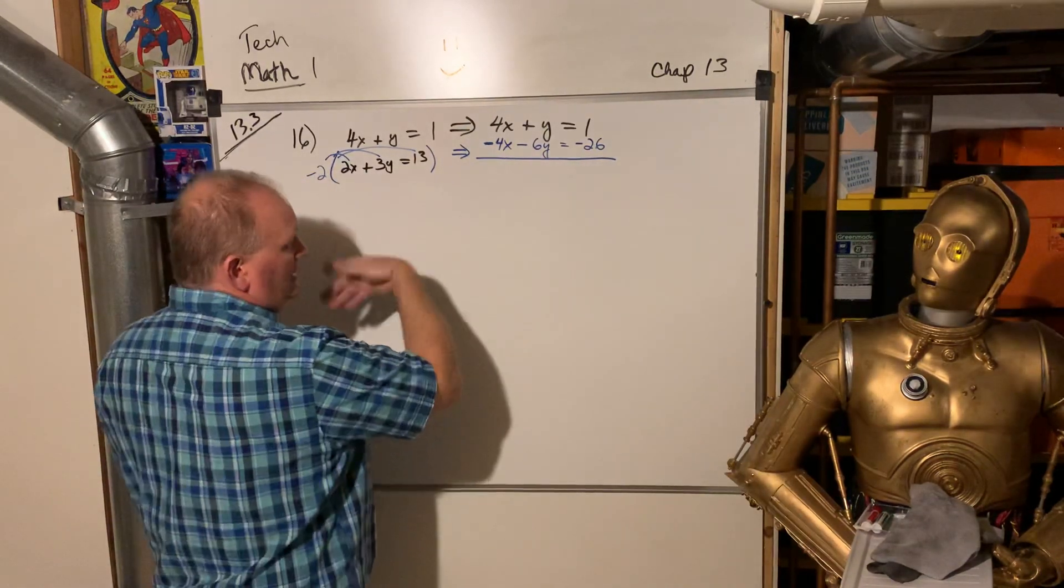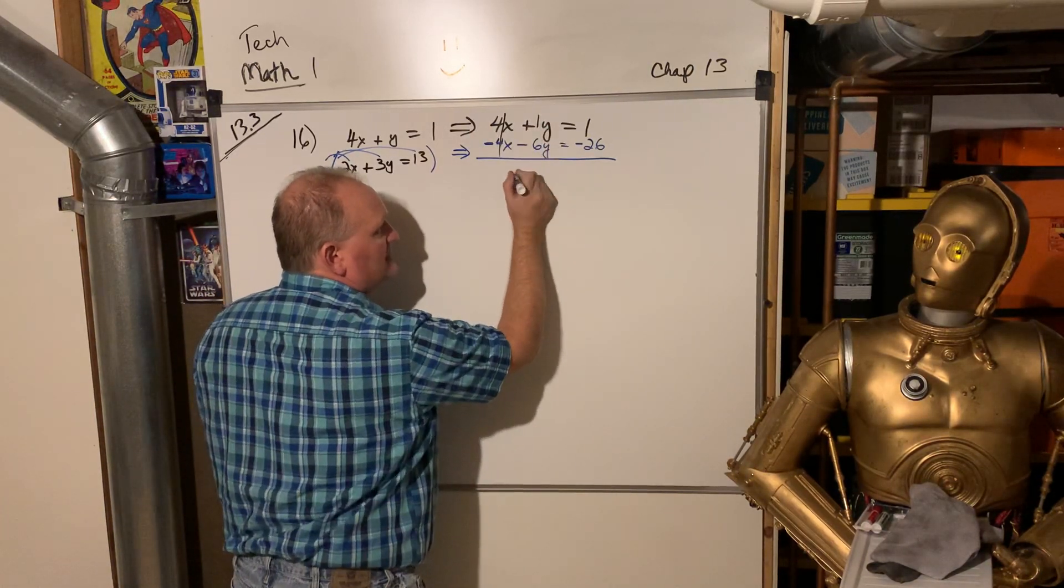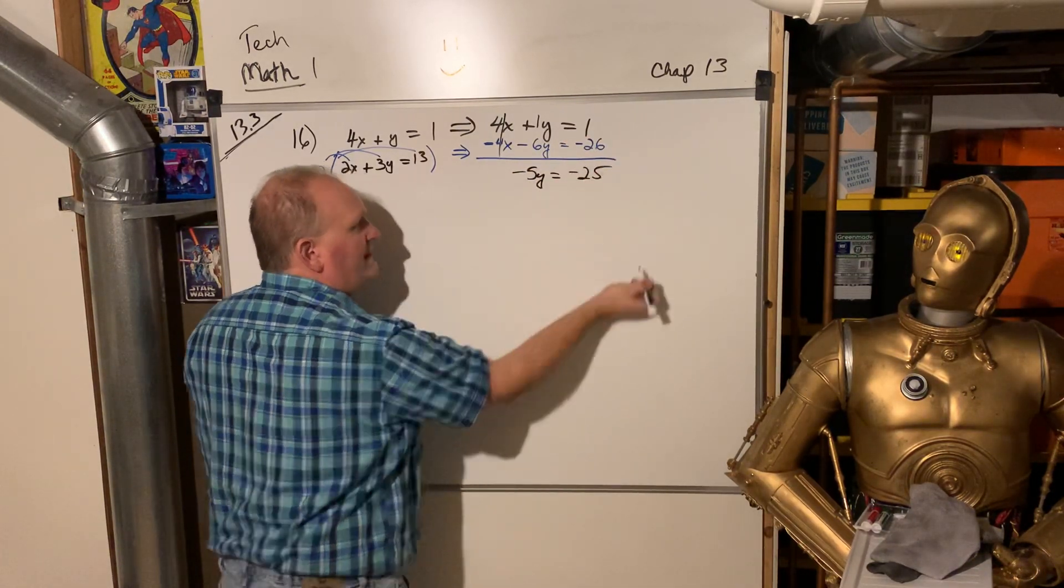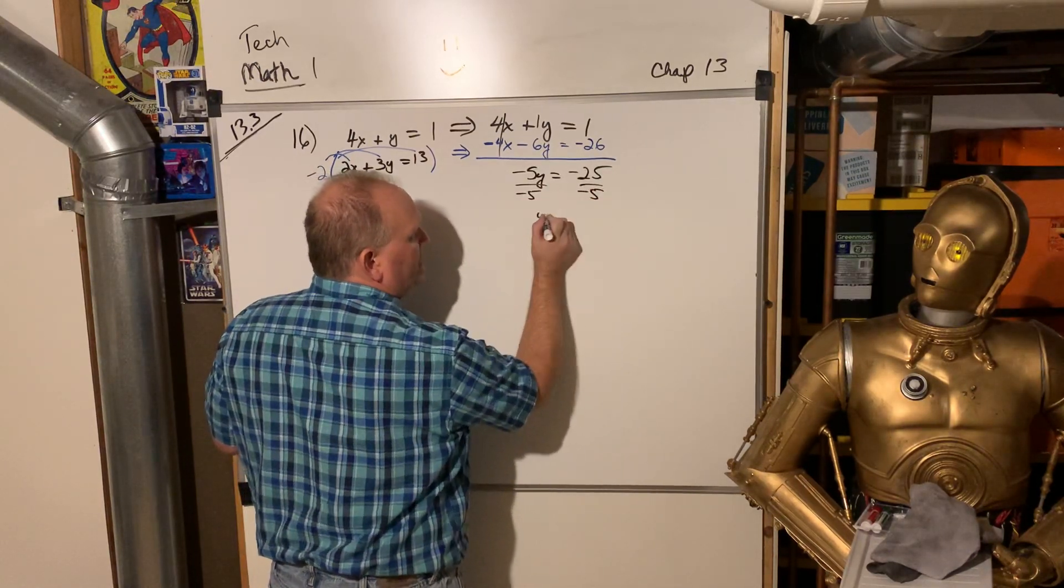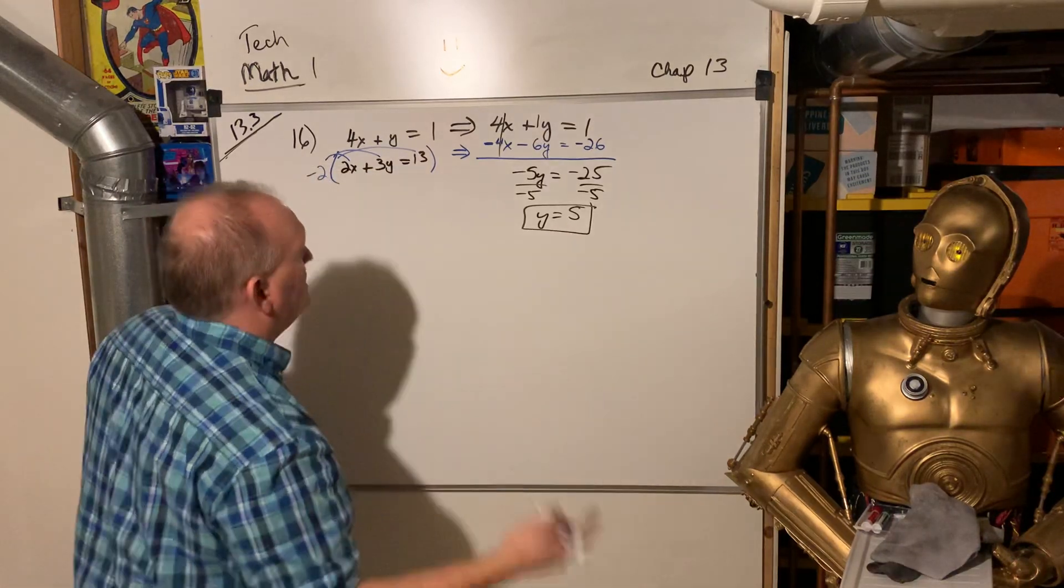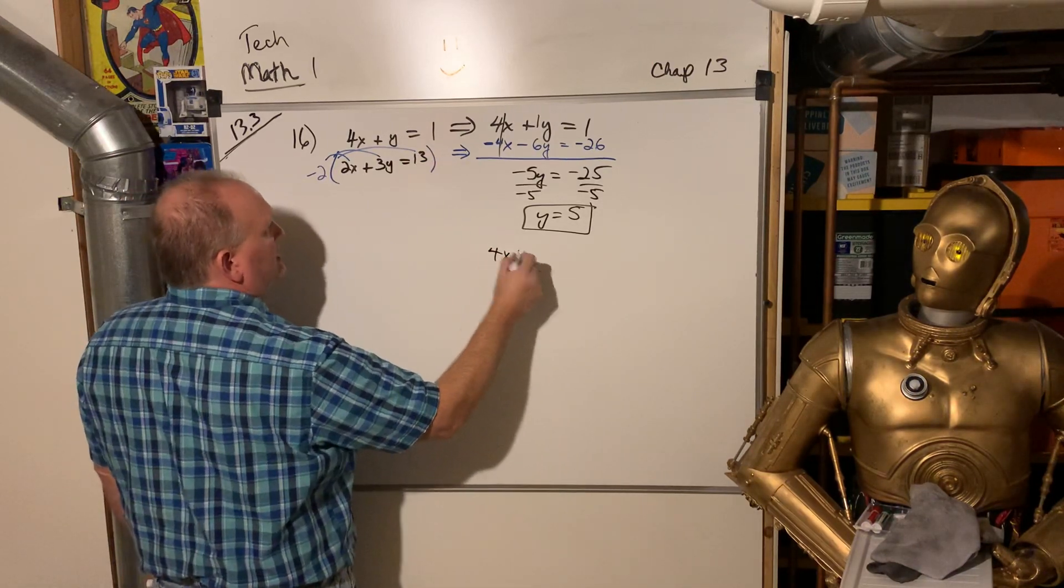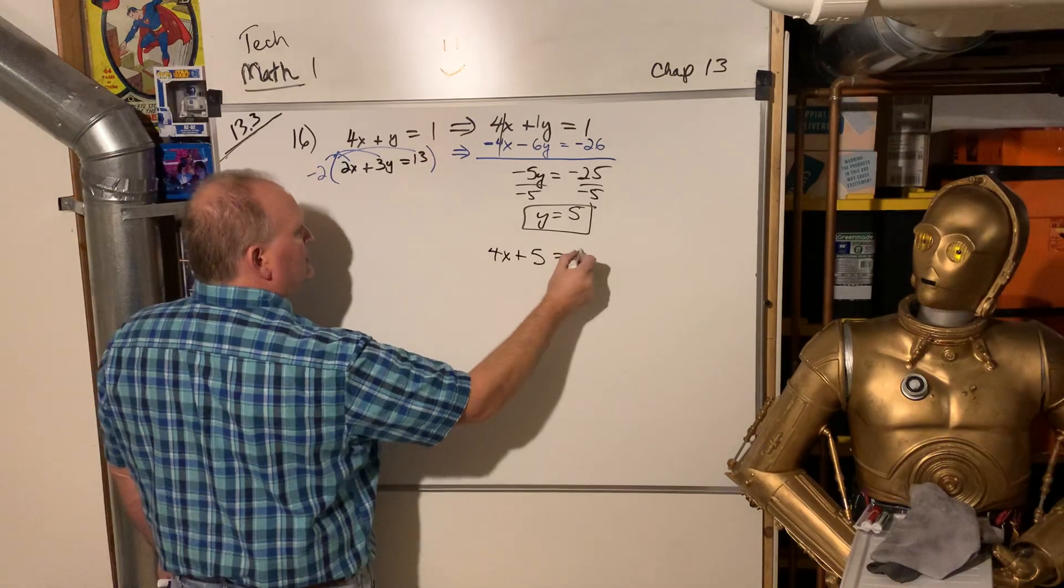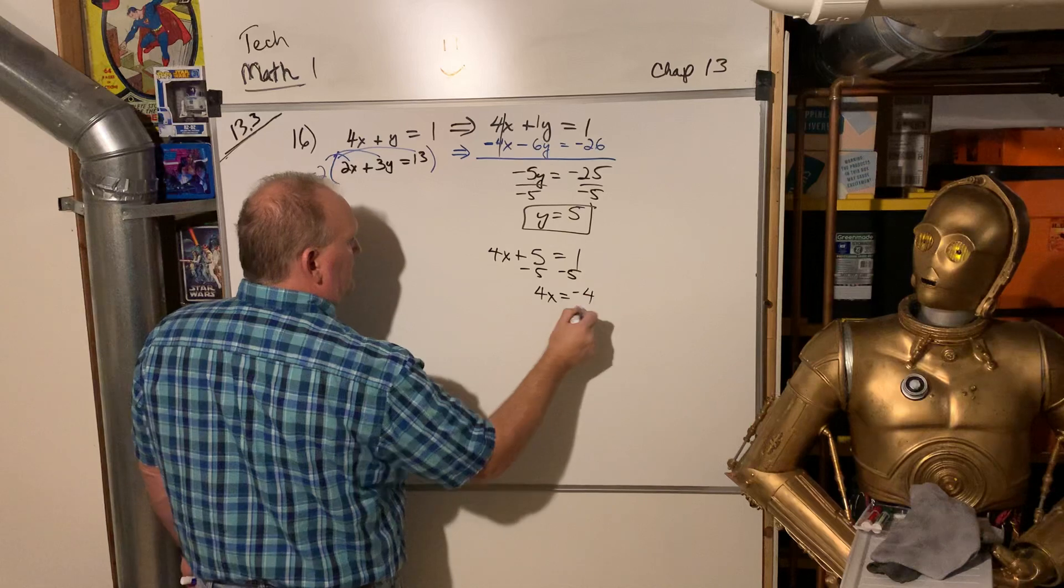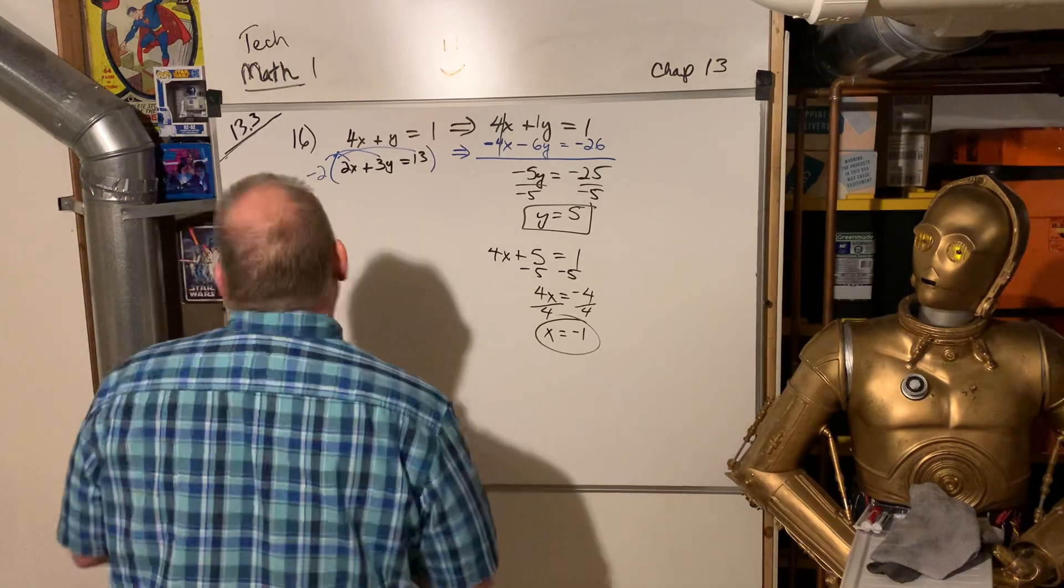Now it's set up just like the last problem was, where you add straight down - the x's in this case die. We got 1y minus 6y, that's negative 5y. We got positive 1 and negative 26, that's negative 25. We divide both sides by negative 5. We get y equals 5. And after you find one answer, you take that answer and sub it into the easier of the two. I think this top one is easier. So 4x plus, instead of y, we'll put a 5 there, equals 1. And then get rid of the 5 and divide by 4. And there we have it.